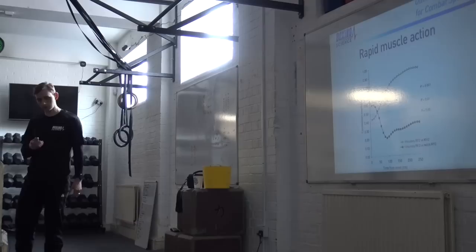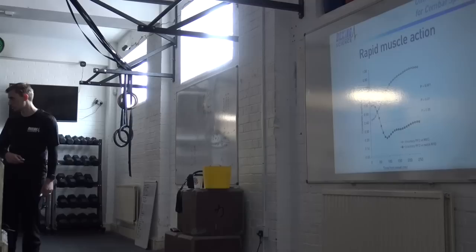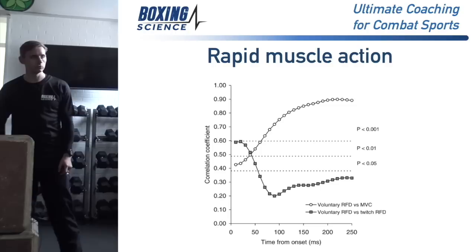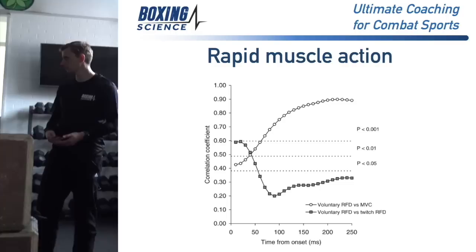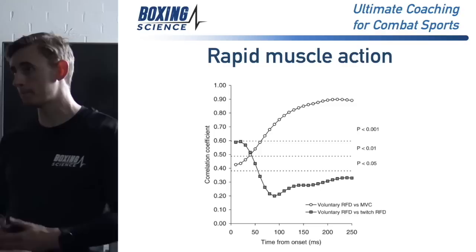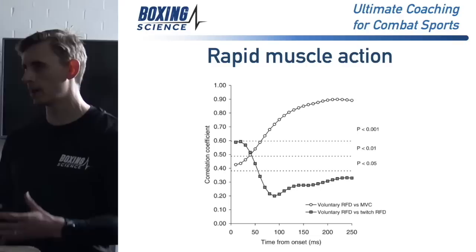So here's another graph. Down here we've got time - the time from the onset of muscle action. Scandinavian researchers got participants in a dynamometer, which measures strength, and had them kick out. They looked at how quickly they develop force and over what time period. Then they looked at how strong they are by doing a maximum test, and worked out what the maximum force the quadriceps can produce is. Then they looked at how that maximum strength relates to how quickly you can produce force.